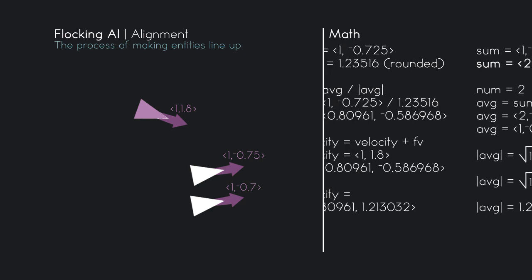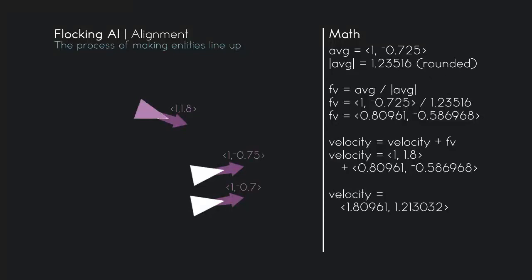To normalize that vector we take that vector divided by that length. So 1, negative 0.725 divided by 1.23516 will give us a resulting force vector of 0.80961, negative 0.586968. So the top entity will have its current velocity changed so that the y gets smaller and the x gets bigger. So the velocity of that entity will become 1.80961, 1.213032.